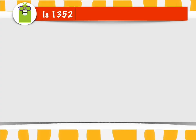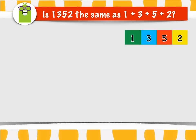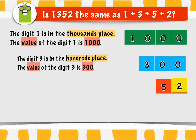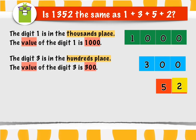So, is 1,352 the same as 1 plus 3 plus 5 plus 2? Let's check. Again, the digit 1 is in the thousands place. The value of the digit 1 is 1,000. The digit 3 is in the hundreds place. The value of the digit 3 is 300.